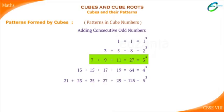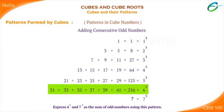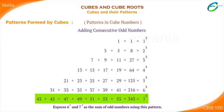Using this pattern, we can express any cube number as a sum of odd numbers. Let us express 6³ and 7³ as the sum of odd numbers. 6 cube can be written as the sum of 6 odd numbers starting from 31. Similarly, 7 cube is the sum of 7 odd numbers starting from 43.